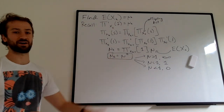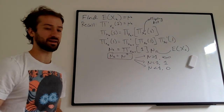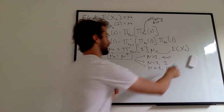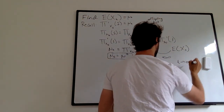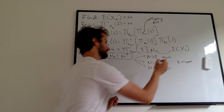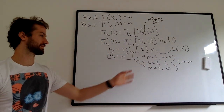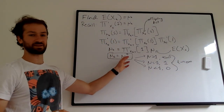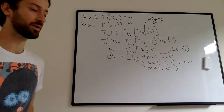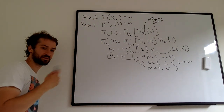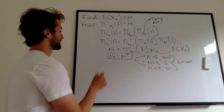If mu is less than one, mu to the t will go to zero as t goes to infinity — it's something less than one to the power of infinity. And again, we saw that if the mean is less than one, the population will go extinct. So this result is consistent with what we know about extinction.